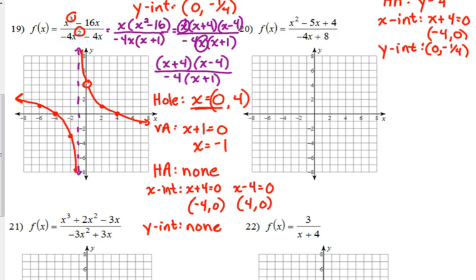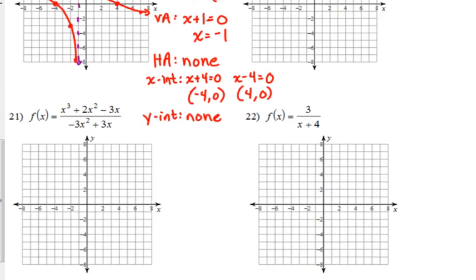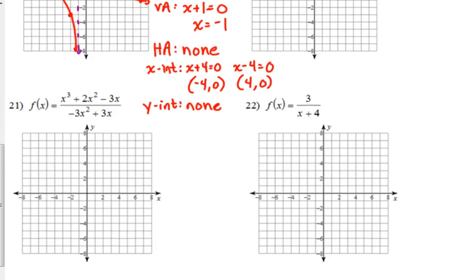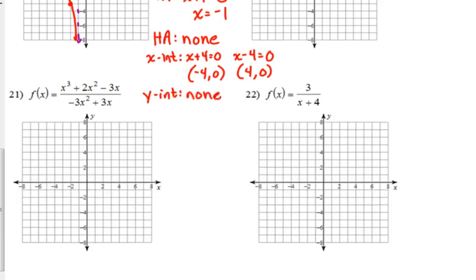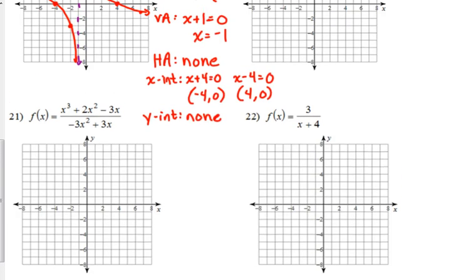Let's do number 21 as well. x cubed plus 2x squared minus 3x over negative 3x squared plus 3x. Alright. So, we want to factor and simplify. So in the numerator, we start with the GCF of x. It exits with x squared plus 2x minus 3.